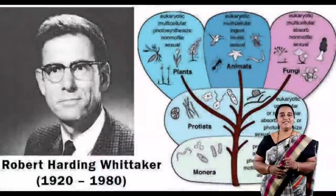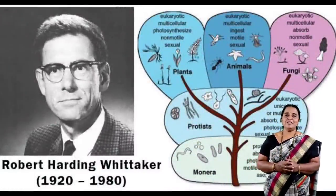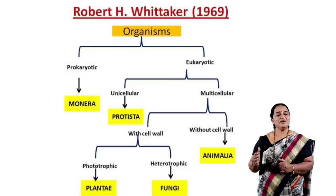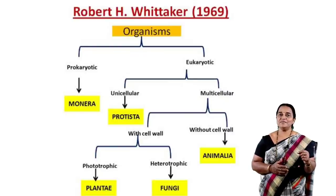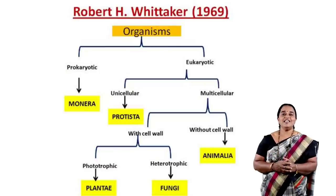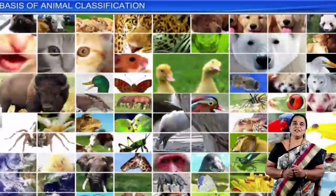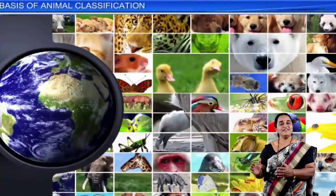As per Robert Whittaker's five kingdom classification system, which believes in phylogeny — that is evolutionary interrelationship — animals are placed at the fifth position. Animals are eukaryotic, multicellular, known for heterotrophism, motility, along with sense organs, neural and chemical coordination. This topic we divide into three parts: first part is basis of classification, second part includes non-chordates, and third part includes chordates. Accordingly, you will expect questions in competitive exams.